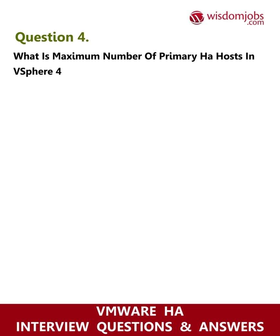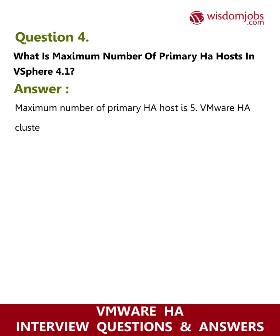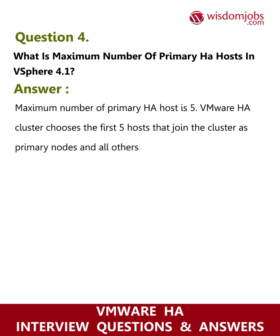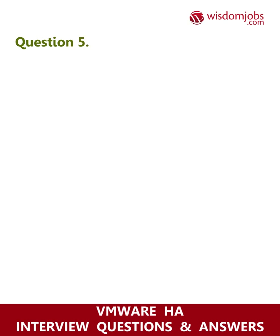Question 4: What is the maximum number of primary HA hosts in vSphere 4.1? Answer: The maximum number of primary HA hosts is 5. The VMware cluster chooses the first 5 hosts that join the cluster as primary nodes, and all other hosts are automatically selected as secondary nodes.